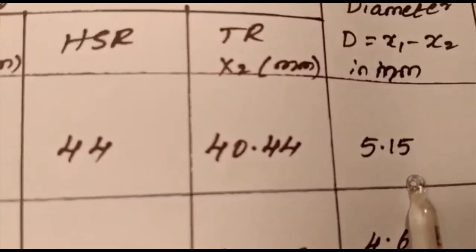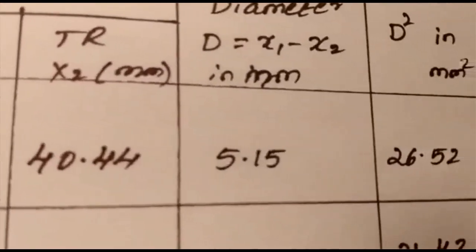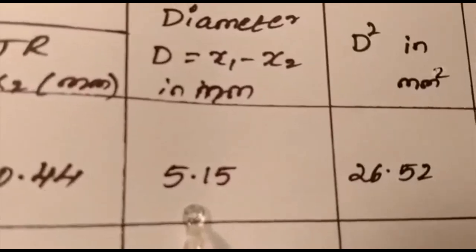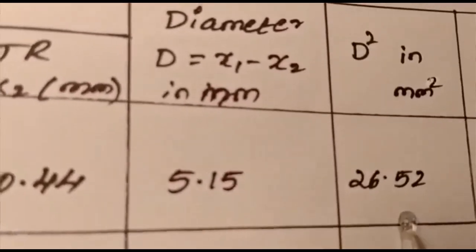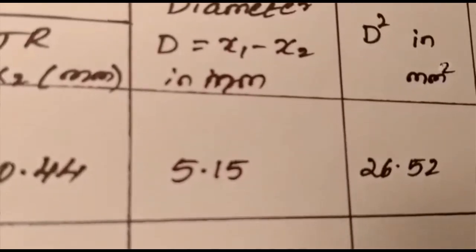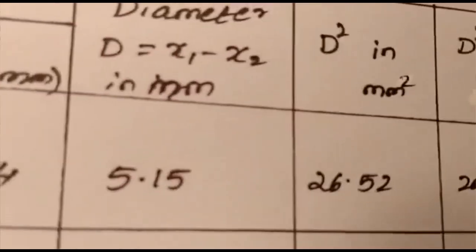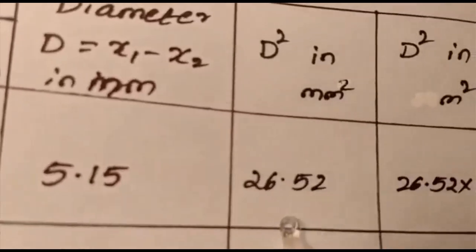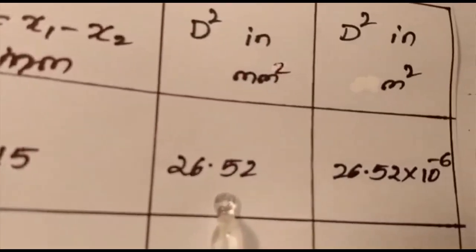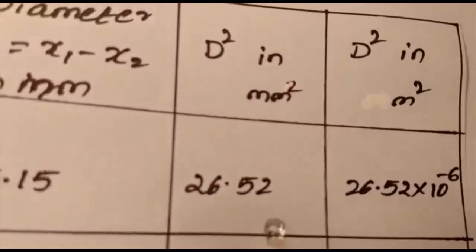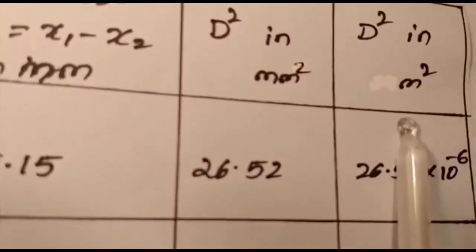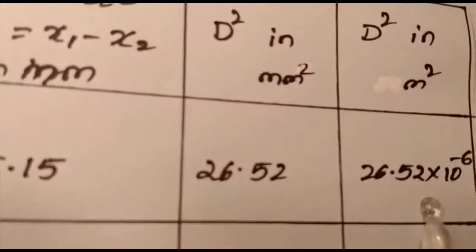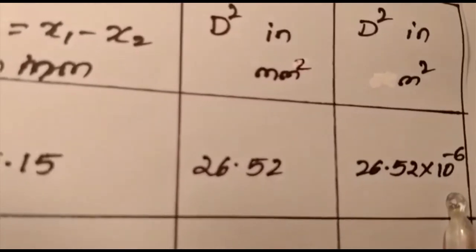Next, square the diameter value. D² equals 5.15 squared, giving 26.52 mm². Since the unit of radius of curvature is in meters, we convert: D² equals 26.52 × 10⁻⁶ m².